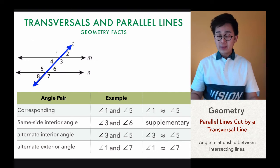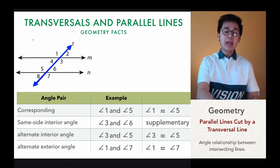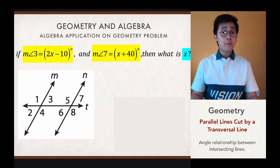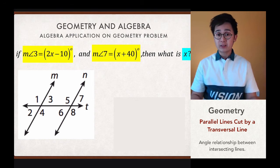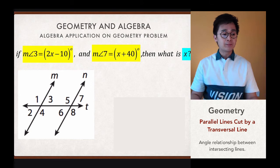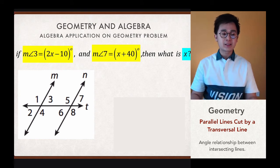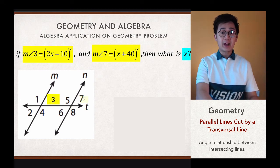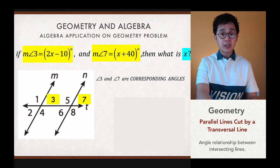This is going to be extremely useful in solving problems involving intersecting lines. Let's apply these relationships to a complex geometry problem involving algebra. If the measurement of angle three is equal to 2x minus 10 degrees and the measurement of angle seven is x plus 40 degrees, what is the value of x? We relate this to our diagram: angle three and angle seven are corresponding angles, and corresponding angles are congruent.